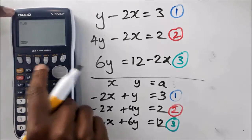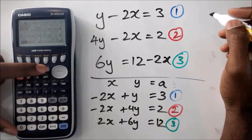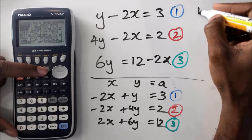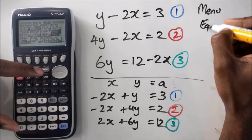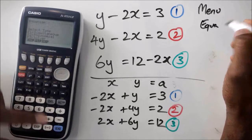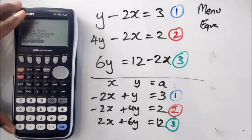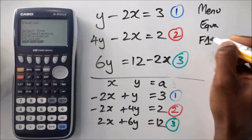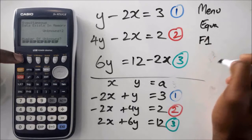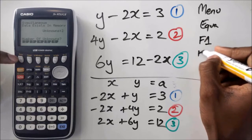So what you want to do is, I'll write the instructions as we go along. So click on menu, go into equation, and I think it's F1 for simultaneous equations. And number of unknowns is 2, so you're pressing F1 again.